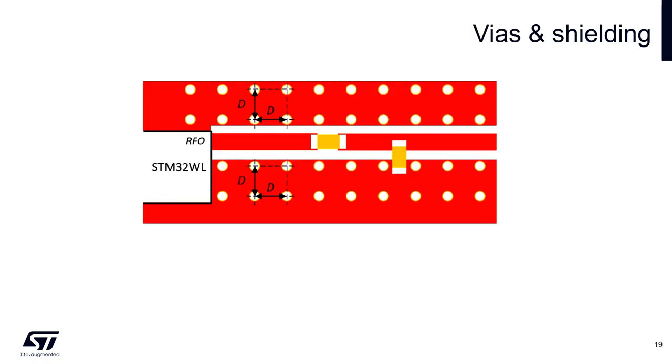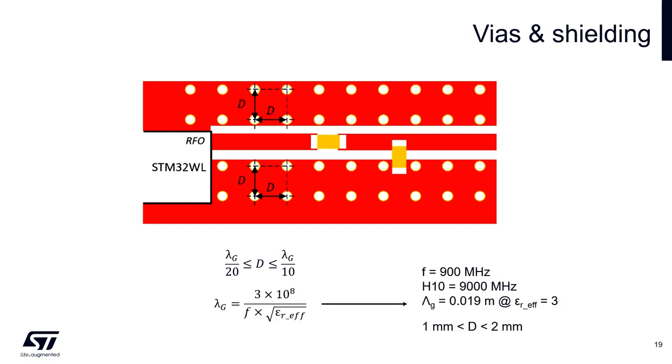As partially mentioned earlier, big ground planes on different layers should be stitched together by vias. Typical distance among the vias can be calculated by the following formula, where lambda or wavelength is calculated like this. For example, if we assume working frequency 900 MHz, 10th harmonic as the highest frequency and the effective permittivity of 3, then the recommended distance is between 1 and 2 mm.